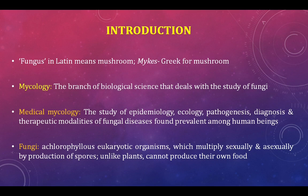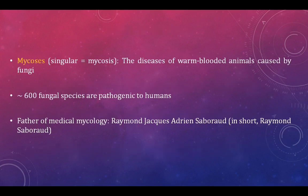Fungi are achlorophyllous — they have no chlorophyll. They are eukaryotic organisms that multiply sexually or asexually with production of spores. Unlike plants, they cannot produce their own food because they lack chlorophyll. Mycoses refers to diseases of warm-blooded animals caused by fungi. A single fungal infection of warm-blooded animals is called a mycosis.